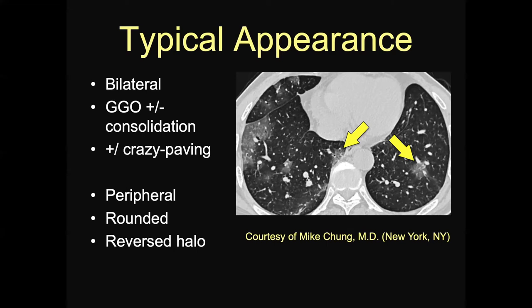This case shows a basilar predominant ground glass opacity. It is asymmetric but involves both lower lobes and both lungs. On the right, we have peripheral ground glass opacity — some more confluent in the anterior basal right lower lobe, whereas other portions are more rounded or nodular in the middle lobe, as well as the mid portion of the left lower lobe, with perfectly normal lung admixed in there. Note the absence of pleural effusion — not a commonly reported finding.